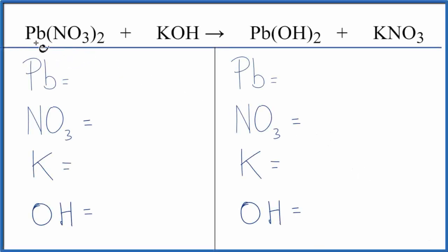In this video, we'll balance the equation for Pb(NO₃)₂ plus KOH. That's lead 2 nitrate plus potassium hydroxide.